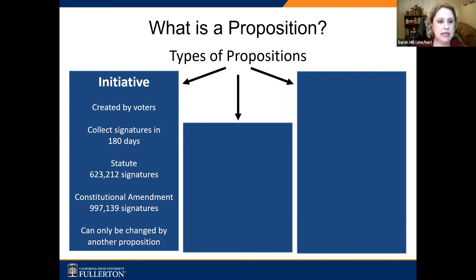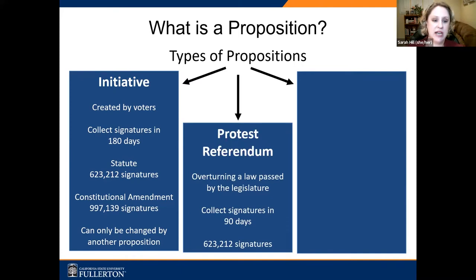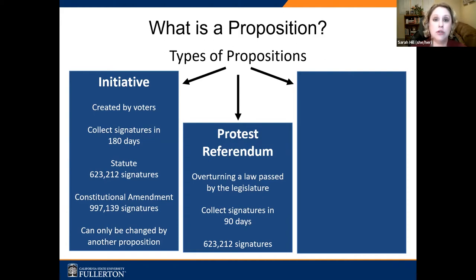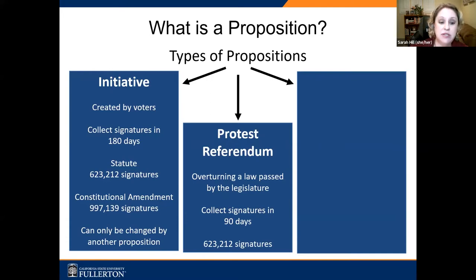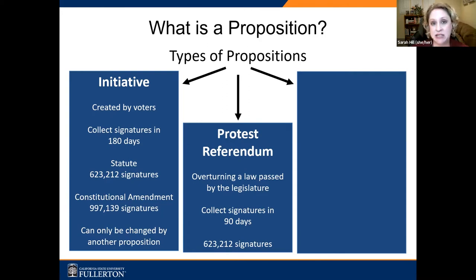Another way we get propositions is through a protest referendum — we have one of these on the ballot. This is when the legislature passes a law, the governor signs it, but some group doesn't like it and wants to overturn it. They have only 90 days — that is really tight. You have to be very well organized and funded to collect signatures, again five percent of the last vote for governor. If you get those signatures in 90 days, you force a vote on that bill and the people get the final say by simple majority. We don't get a lot of these just because that 90 days is really tight.